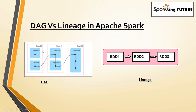So if you see here in the DAG, it will have different stages, different tasks and all that. When your Spark application is running, if you check the DAG, it will show clearly the task details like for that particular job — how many stages are there, how many tasks are created.